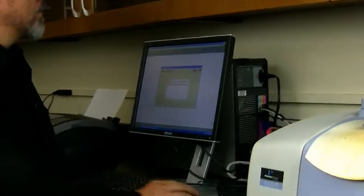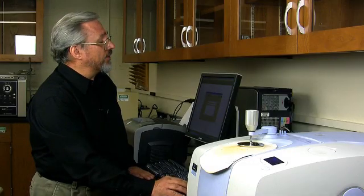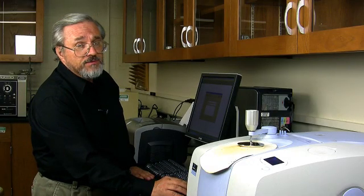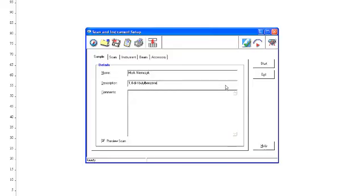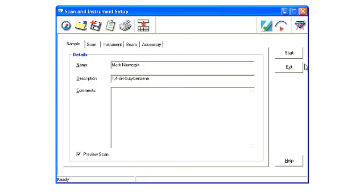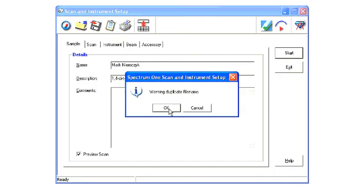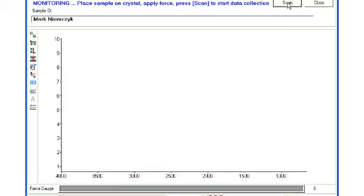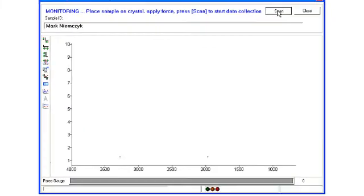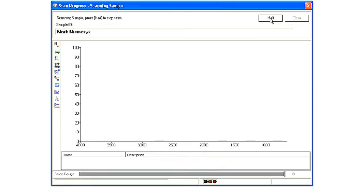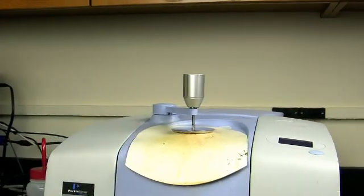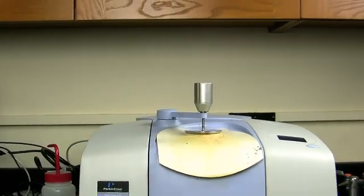Now we're going to hit the button called Start. We're going to ignore that. And then we're going to click on Scan. Once again, it's going to take four scans. That will take a little bit of time. And you can see the IR already being produced.